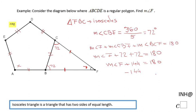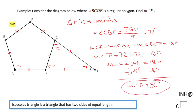The last step for finding the measure of angle F is to subtract 144, so the measure of angle F is 36 degrees. And that's it! If you enjoyed this clip, don't forget to click the like button and come back at C squared for more help. Thank you.